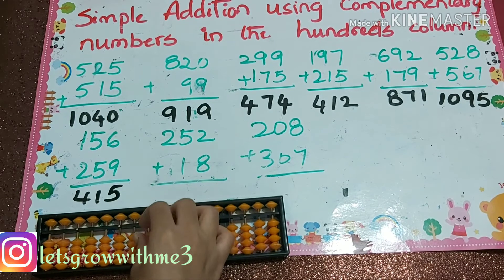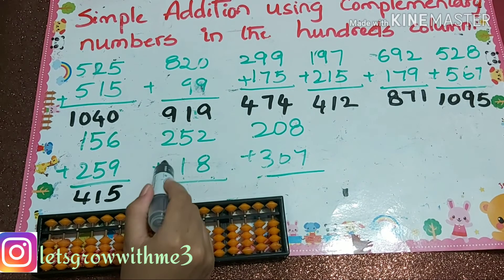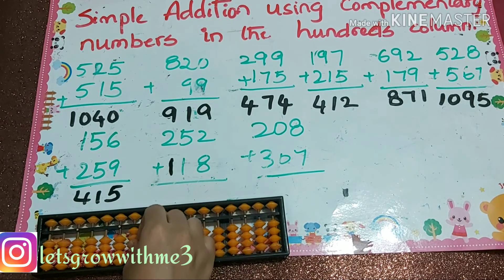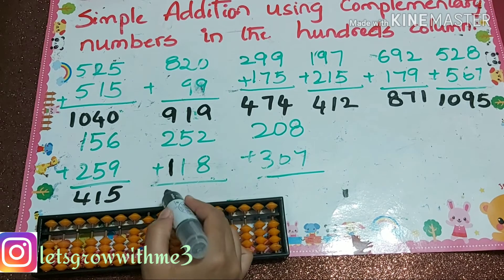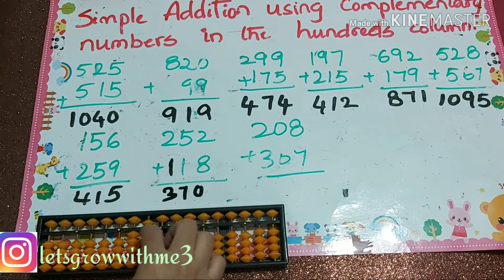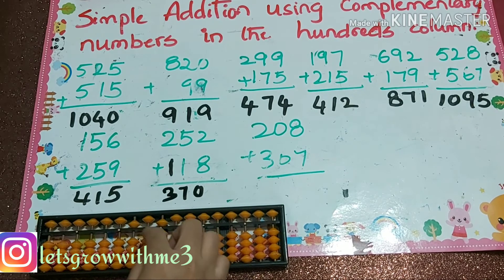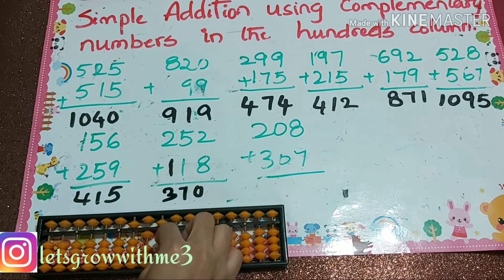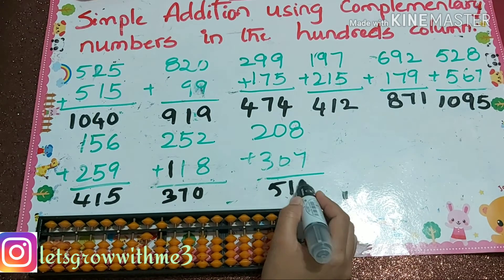Next one: 252 plus 118. In the hundreds column: 1; tens column: 1 and 8. Your answer is 370. Next one: 208 plus 307 — plus 5 minus 2, and 7: how to add 7? Plus 10 minus 3. Your answer is 515.